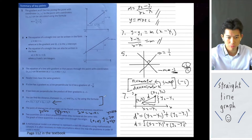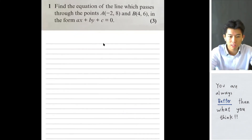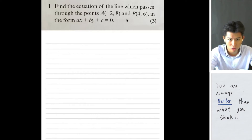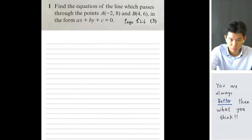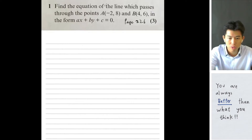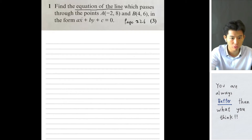That's pretty much all the concepts you need to know to do the questions. Let's start with question 1 from the review exercise, which is from page 226 in the textbook. In this question, they want us to find the equation of the line passing through two points A and B, and write it in the form ax plus by plus c equals 0.